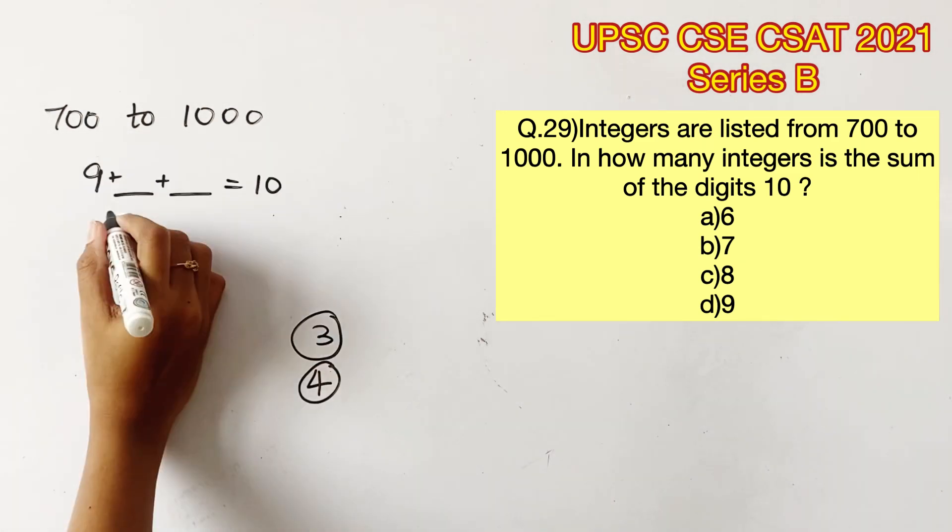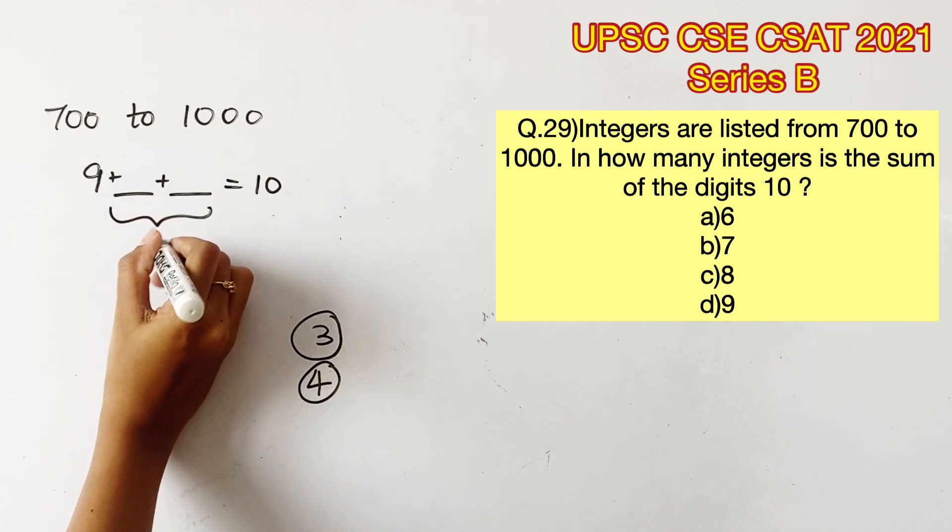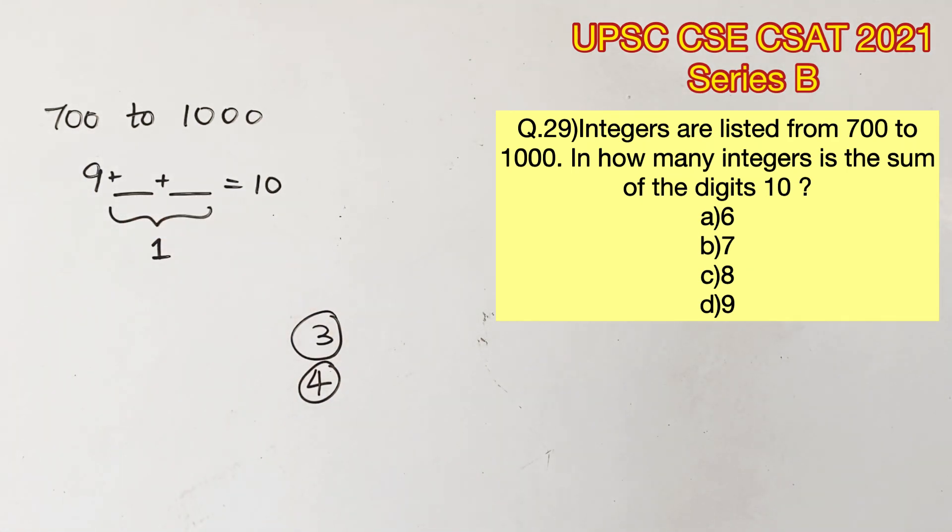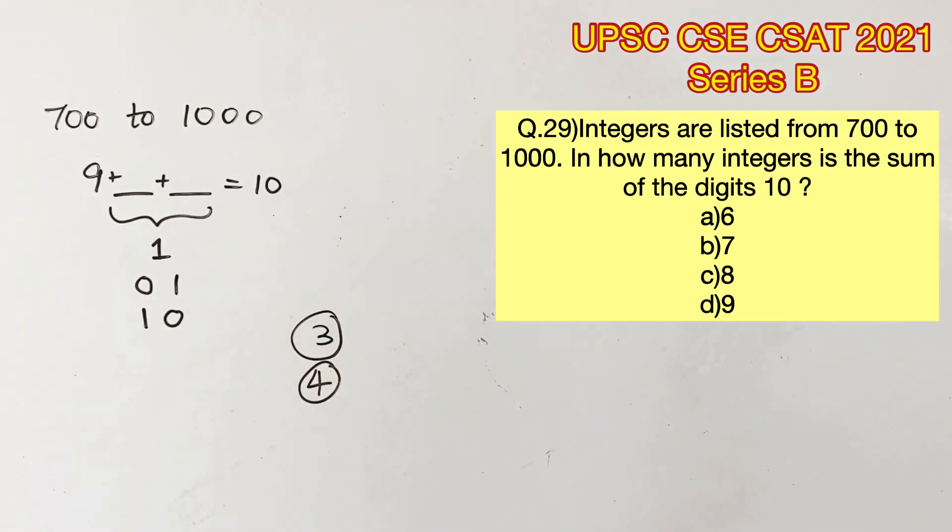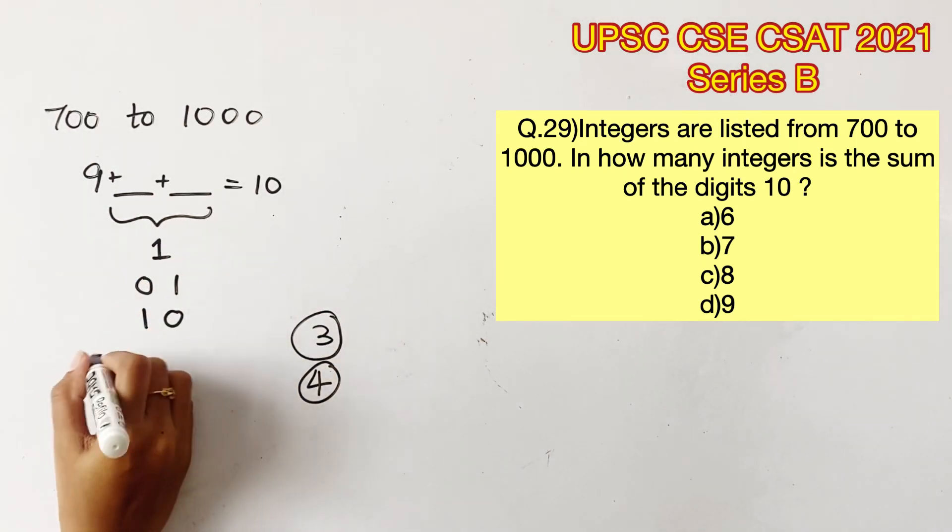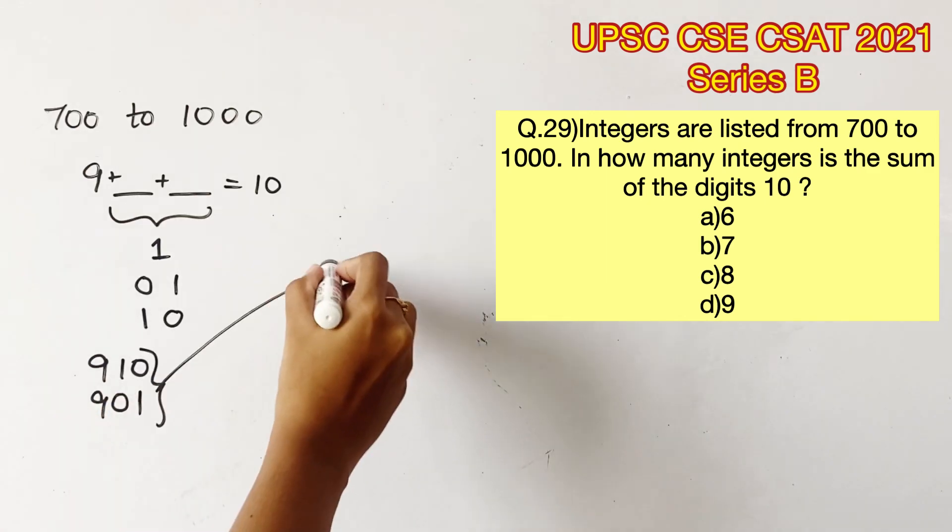Let's check for when the first value is 9. So these two should add up to 1 because 9 plus 1 is 10. Now we have only two possibilities that are 0, 1 and 1, 0. So the numbers would be 901 and 910. So there are two possibilities here.